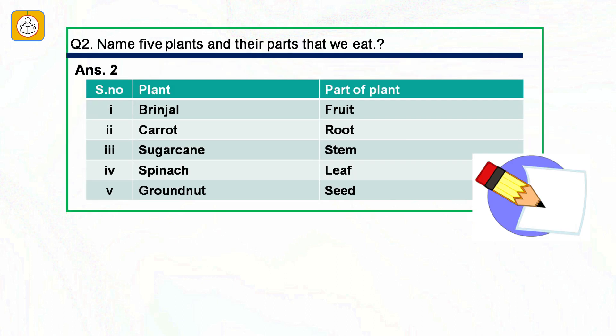Question number two: Name five plants and their parts that we eat. The plants are brinjal, carrot, sugarcane, spinach and groundnut. Brinjal is essentially the fruit of the plant because it contains the seed. Carrot, which grows underground, is the root of the plant. Sugarcane is the stem. In the spinach plant, we eat the leaf. Groundnut is the seed which we eat.